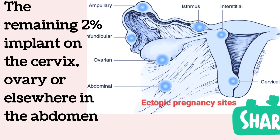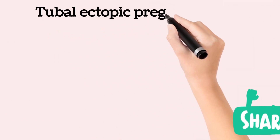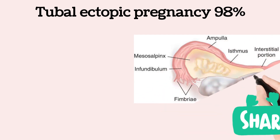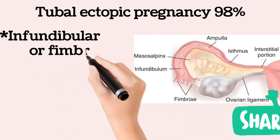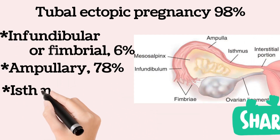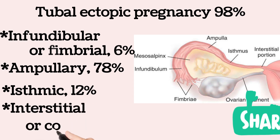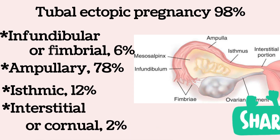The most common tubal ectopic site is the ampullary region at 78% of cases. In the isthmus there is 12%, in the infundibular or fimbrial region there is 6%, and the interstitial or cornual region is 2%.